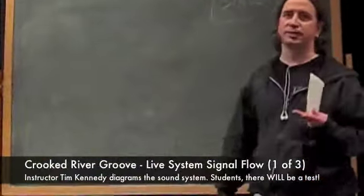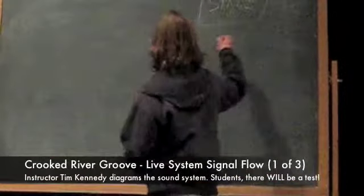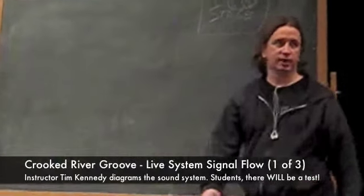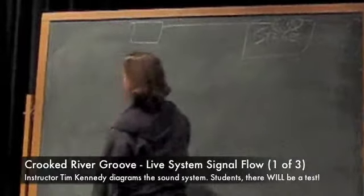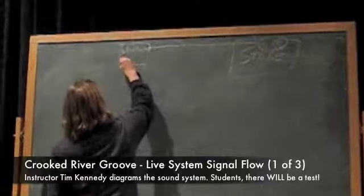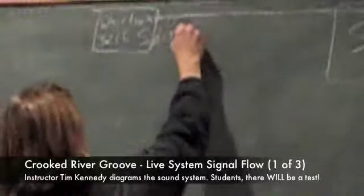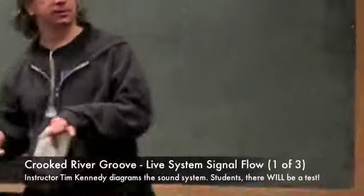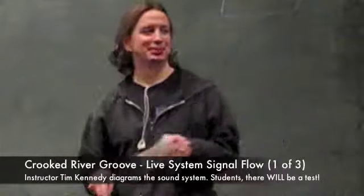Coming from our stage, we have two subsnakes. Subsnakes, basically, are able to get us from the stage to wherever we need to go, whether it's board, splitter, whatever. We'll have a 1 through 12 and a 13 through 24 subsnakes. These subsnakes will be going to our Whirlwind 32 channel splitter. We're taking one signal, splitting it into two.